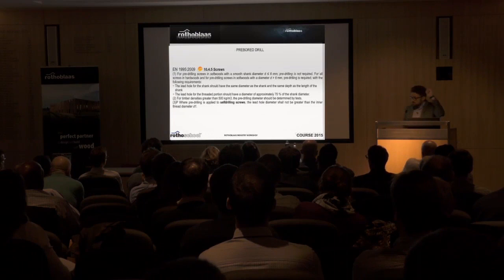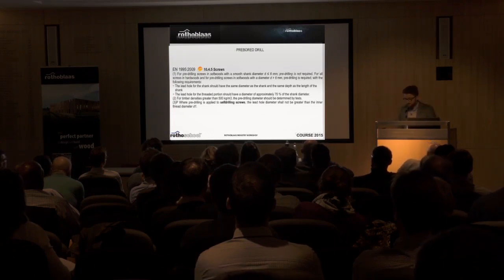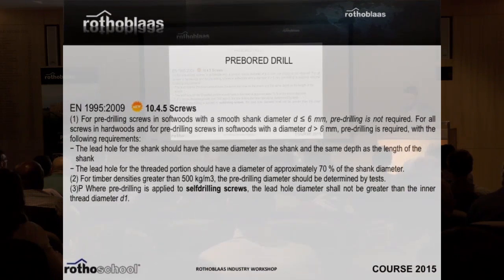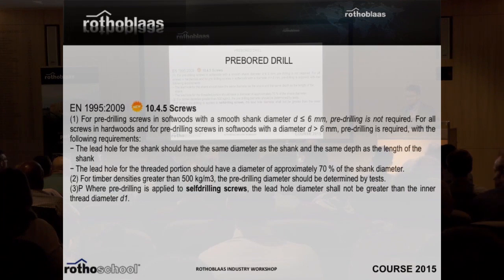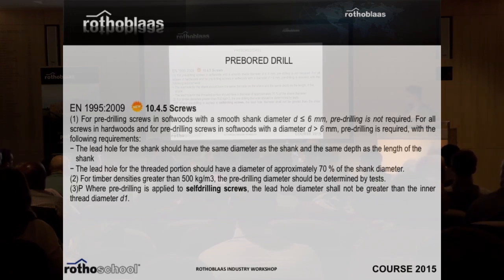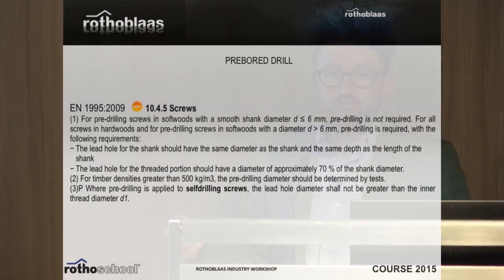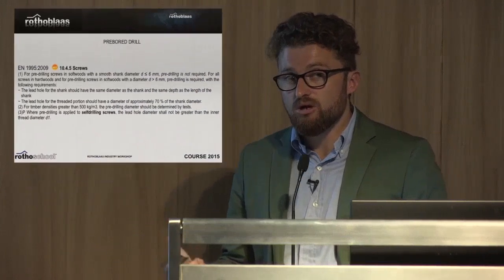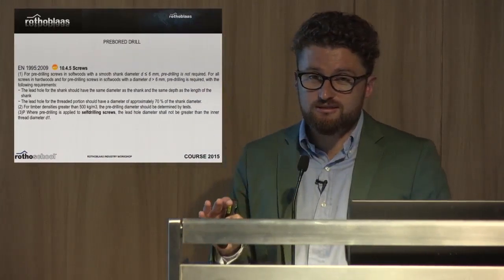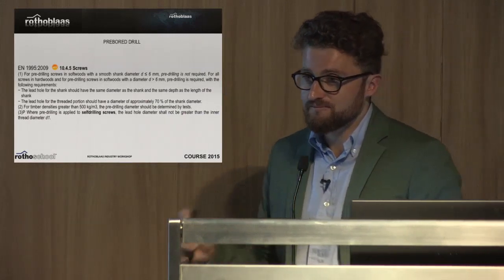I wanted to highlight this passage in the Eurocode — it is curious. The Eurocode was updated in 2009 and only in 2009 for the first time can we see Eurocode 5 speaking about the modern screws. Before 2009, in the first Eurocode of 2004, they were not speaking about modern screws. Only in this 2009 part do they say that the modern screw is self-drilling so you don't need a pre-drill. This shows the discrepancy between technology and code.